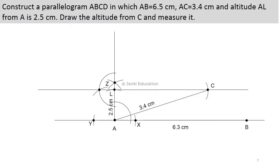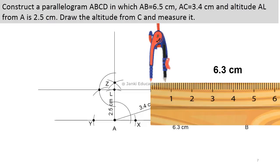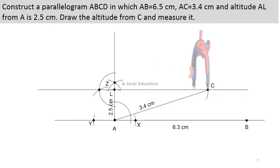So we will be taking a measurement of 6.3 cm and marking an arc from the point C at this one, and we will name it D.